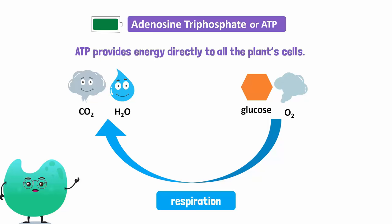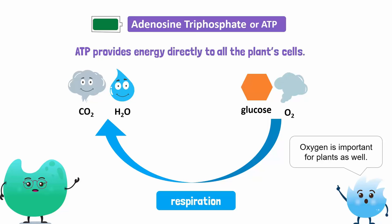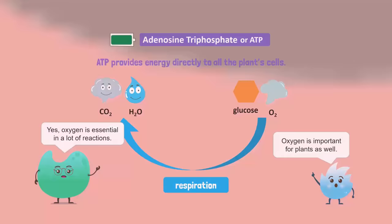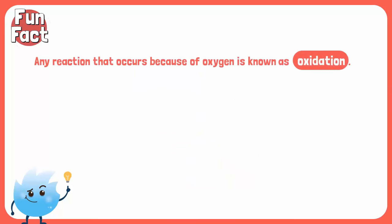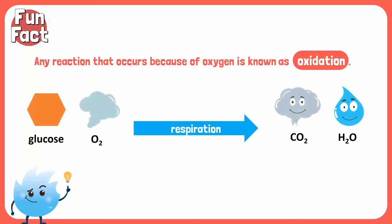So oxygen is important for plants as well. Yes, oxygen is essential in a lot of reactions. Here's a fun fact: any reaction that occurs because of oxygen is known as oxidation. Respiration is an important example of oxidation. Together, photosynthesis and respiration help plants live.